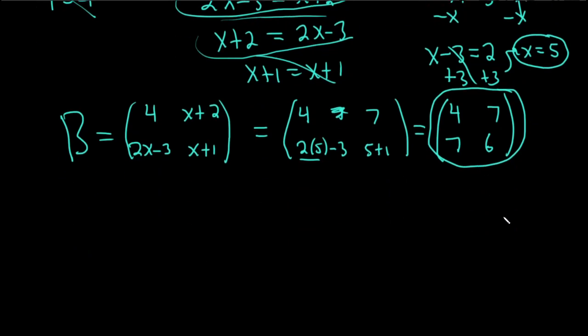You know, you can check your answer, at least partially, by making sure that B is symmetric. Let's go ahead and find the transpose. Let's see. 4, 7. That becomes our column. 7, 6. That becomes our column. Yep, look at that. It's still the same. So all is good.